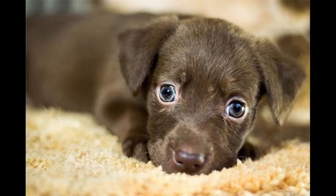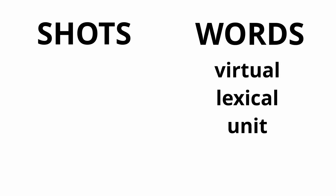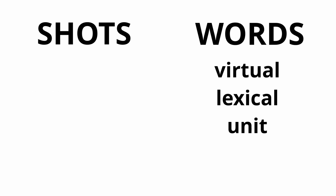This leads to another problem. Imagine a dog. I bet your imagination created a completely different dog than mine or your fellow students', precisely because the word 'dog' is a purely virtual lexical unit. Whereas if you watch a film and a dog appears, everybody who watches that film will identify the very same dog in the sequence, because the dog in the shot is what we call an actualized unit. The actualized unit of film goes against the purely virtual lexical unit of language.